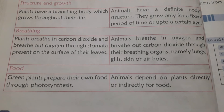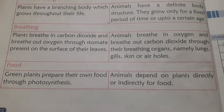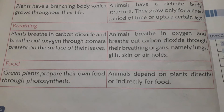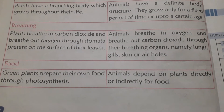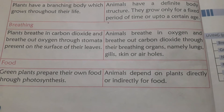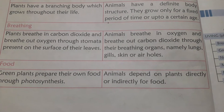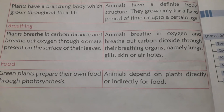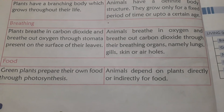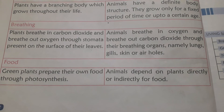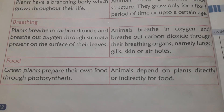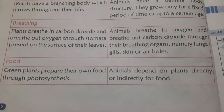The third difference is breathing. Plants breathe in carbon dioxide and breathe out oxygen through stomata present on the surface of their leaves. Animals breathe in oxygen and breathe out carbon dioxide through their breathing organs, namely lungs, gills, skin, or air holes.